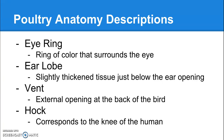The vent is the external opening at the back of the bird. The hock is the only thing that's similar between all three species — just like cattle and swine, they have that joint in the hind leg called the hock. Chickens also have a hock, and it is essentially their knee.